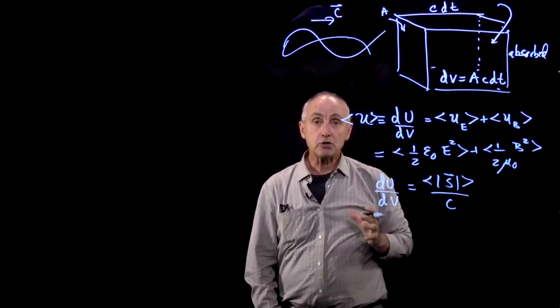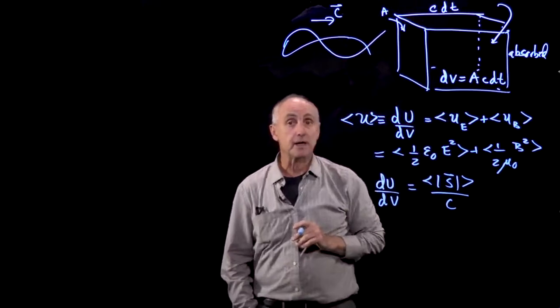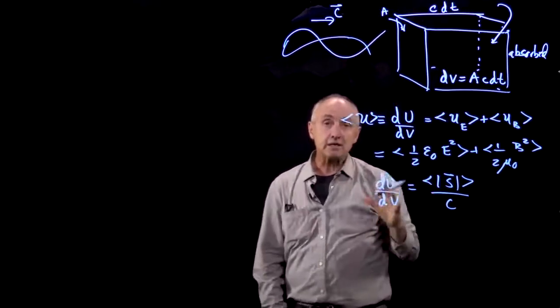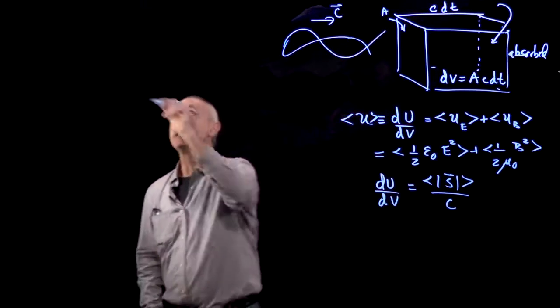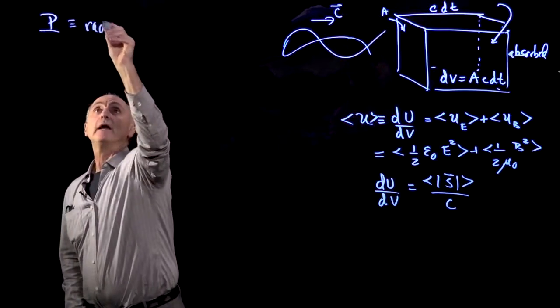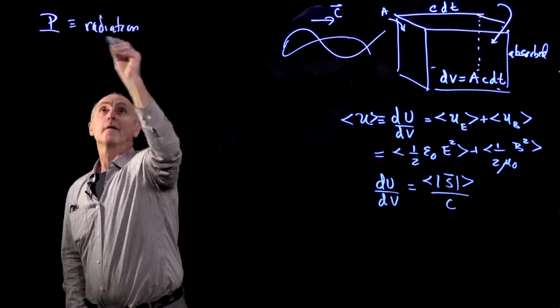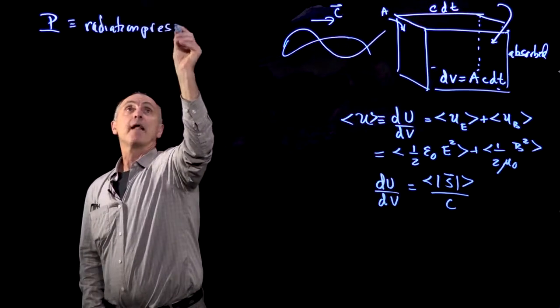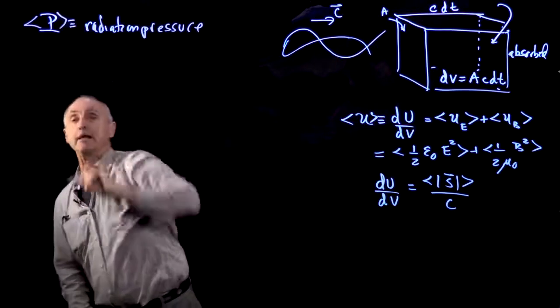Now what we'd like to do is get an estimate of what that pressure is. We'll begin, this pressure is called radiation pressure. P will be the radiation pressure, and what we'd like to do is time average that quantity.